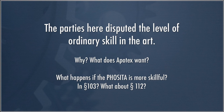So how does that affect the case? What's the strategy that Apotex wants here? They obviously want a higher level of skill. If the skill level is higher, then the person having ordinary skill in the art is more likely to find things obvious. Because if you're at a higher relative skill, you're going to understand more about the prior art, you're going to be able to fill in more gaps, and so that's why Apotex, the patent defendant, wants the most skillful person having ordinary skill in the art that they can come up with.